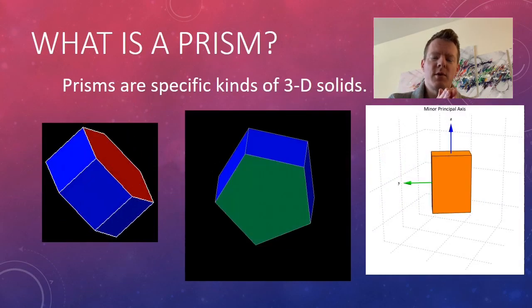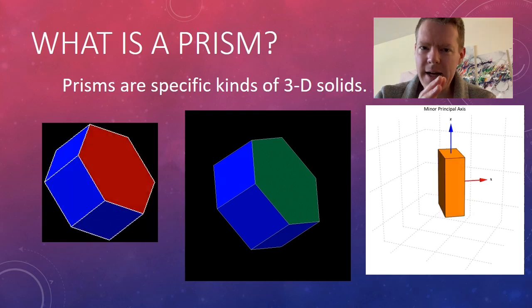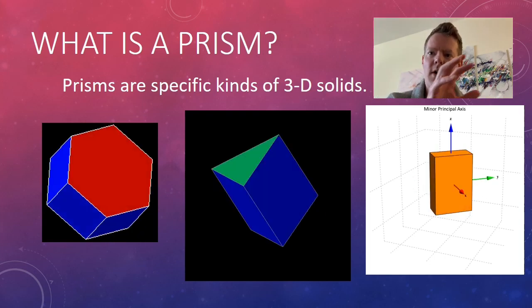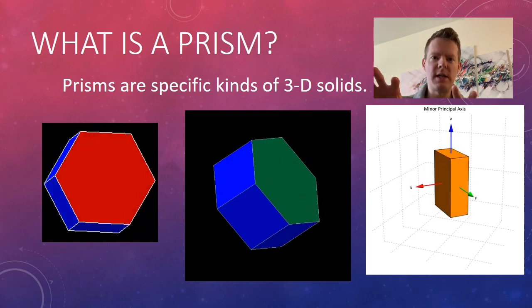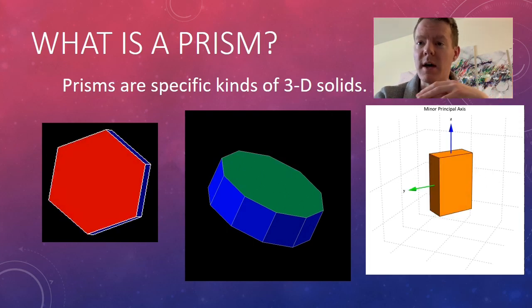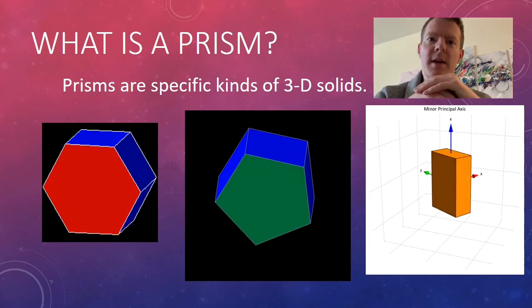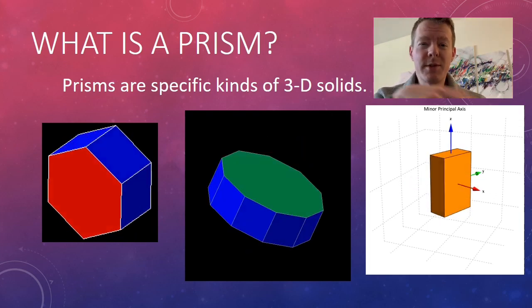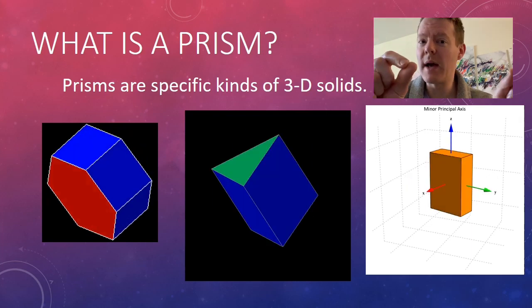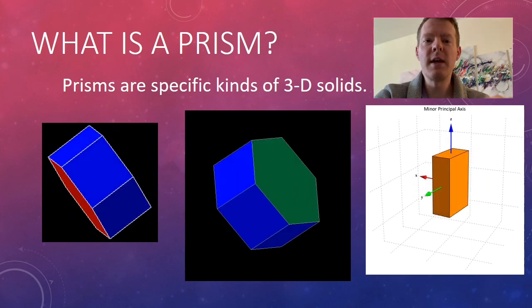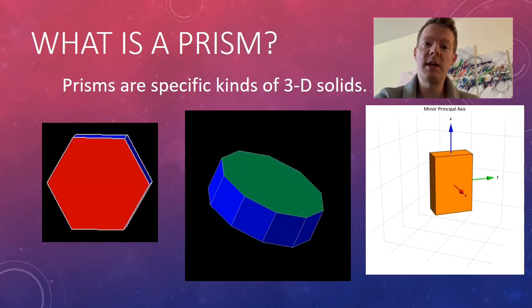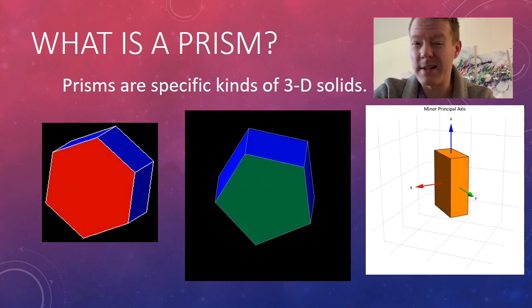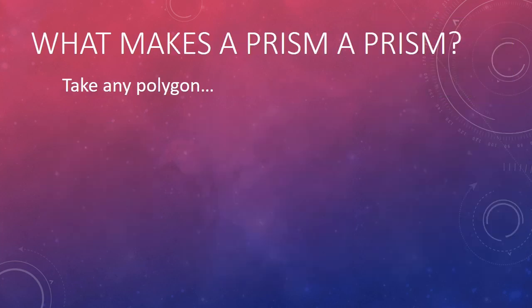Prisms are a very specific kind of 3D solid. All of these things that you see here are examples of prisms. We're going to talk about what makes them prisms, because they all kind of look different but they do have a similarity to each other. Once you know how to build a prism, you kind of understand what a prism is.